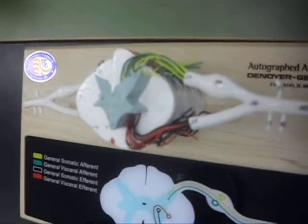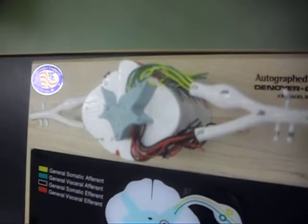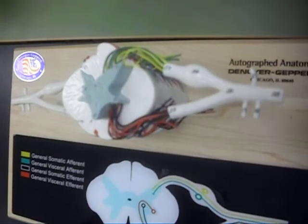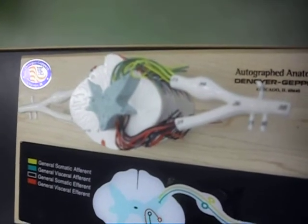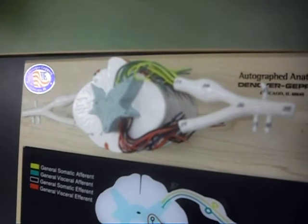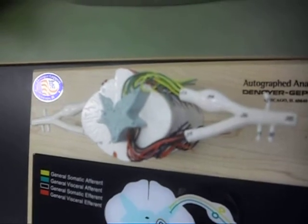What's your dorsal root? Good job. Where is your dorsal root ganglion? Where is your ventral root? Where is your ramus comunicantes, your ventral ramus?